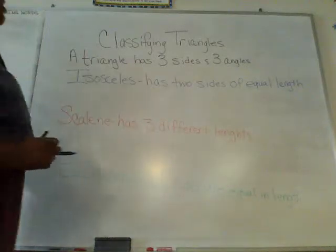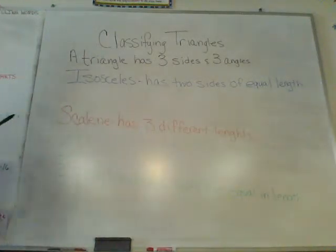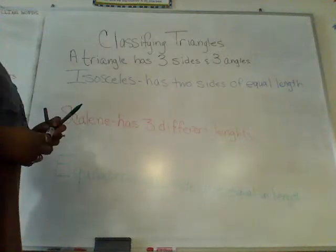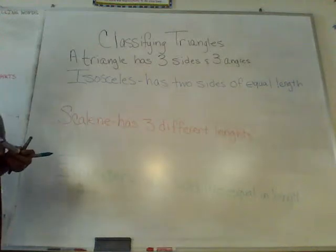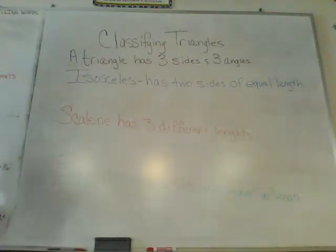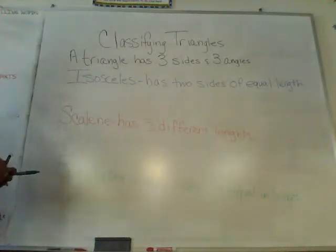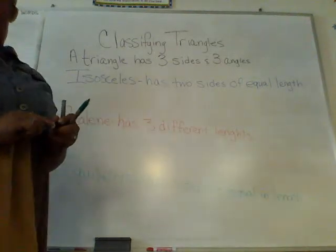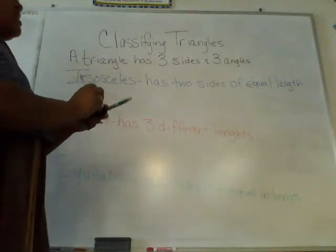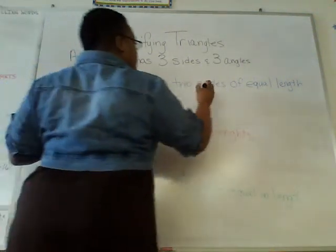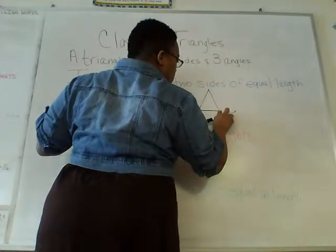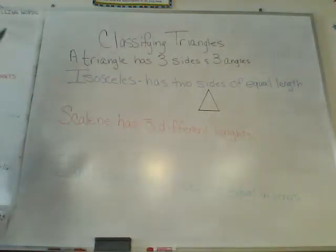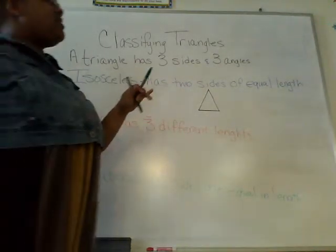So, for example, an isosceles triangle — repeat the word: isosceles. Good job. It has two sides of equal length. Here is an example of an isosceles triangle. It has two sides of equal length.